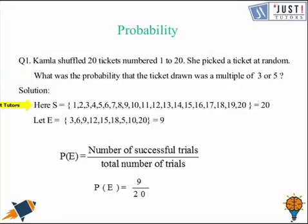So here let's first write the sample space. We denote sample space by a capital S and we put the curved brackets in which we write all the possible outcomes. So we are writing all the numbers from 1 to 20. So we have total 20 number of outcomes. The total number of trials is 20, and the events that is the successful trials will be either the multiple of 3 or the multiple of 5.